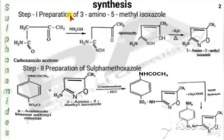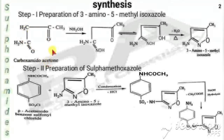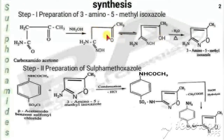Now we will see the synthesis of sulfamethoxazole, which has two steps. Step one is the preparation of 3-amino-5-methylisoxazole. The starting material is carboxamidoacetone — the C(O)NH2 part is called an amide or carboxamide, and the other part is acetone. On reaction with hydroxylamine, the oxygen combines with H2 and is removed as water, so NOH is added and we get an oxime derivative. This oxime then undergoes tautomerism, converting from keto form to enol form.